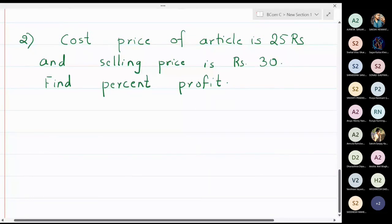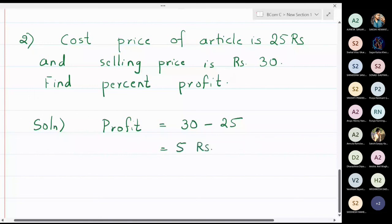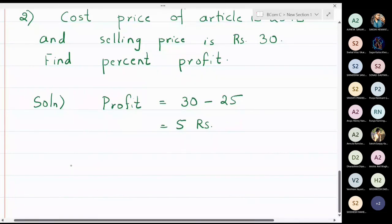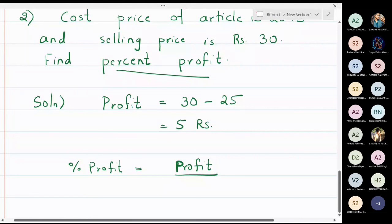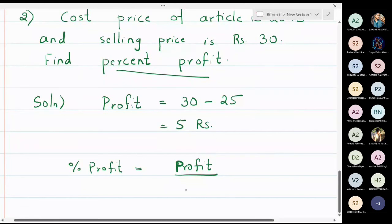Problem 2: The cost price of an article is 25 rupees and it is sold at 30 rupees. Since we are selling at a higher price, we have a profit. The profit is 30 minus 25, which is 5 rupees. We are asked to find the percentage profit.